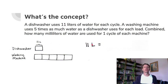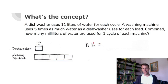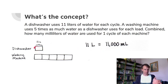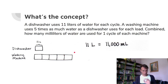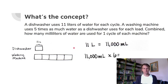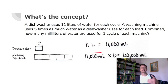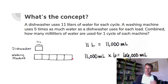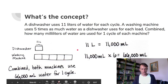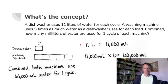One liter is 1,000 milliliters, so 11 liters is 11,000 milliliters. We have six of those groups, so six times 11,000 — think of it as six times 11 with three zeros — equals 66,000 milliliters. Statement: Combined, both machines use 66,000 milliliters of water for each cycle.